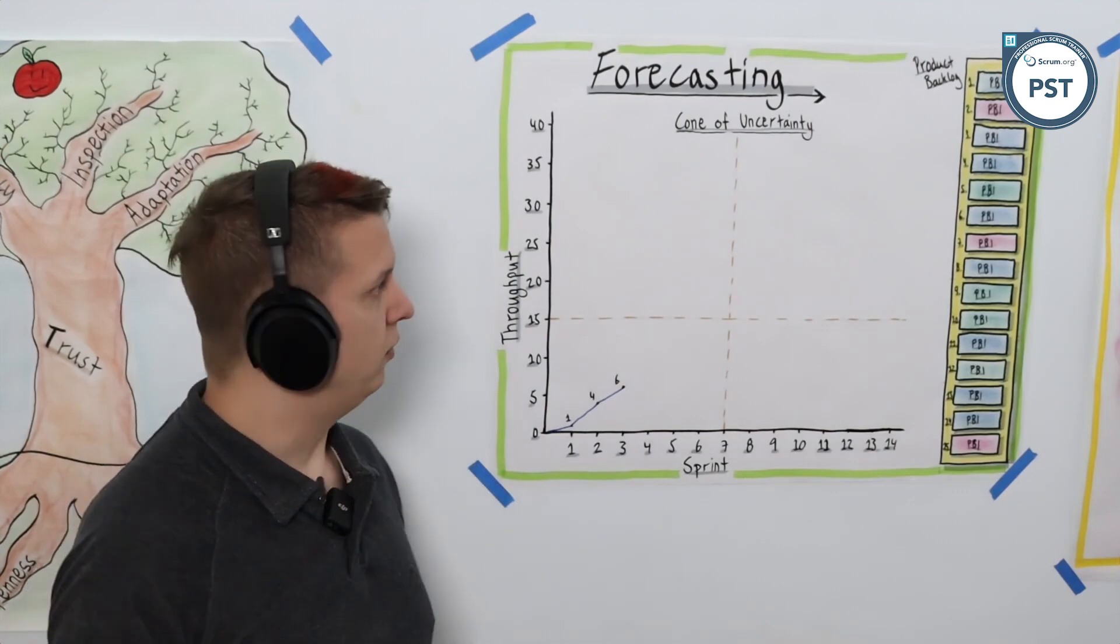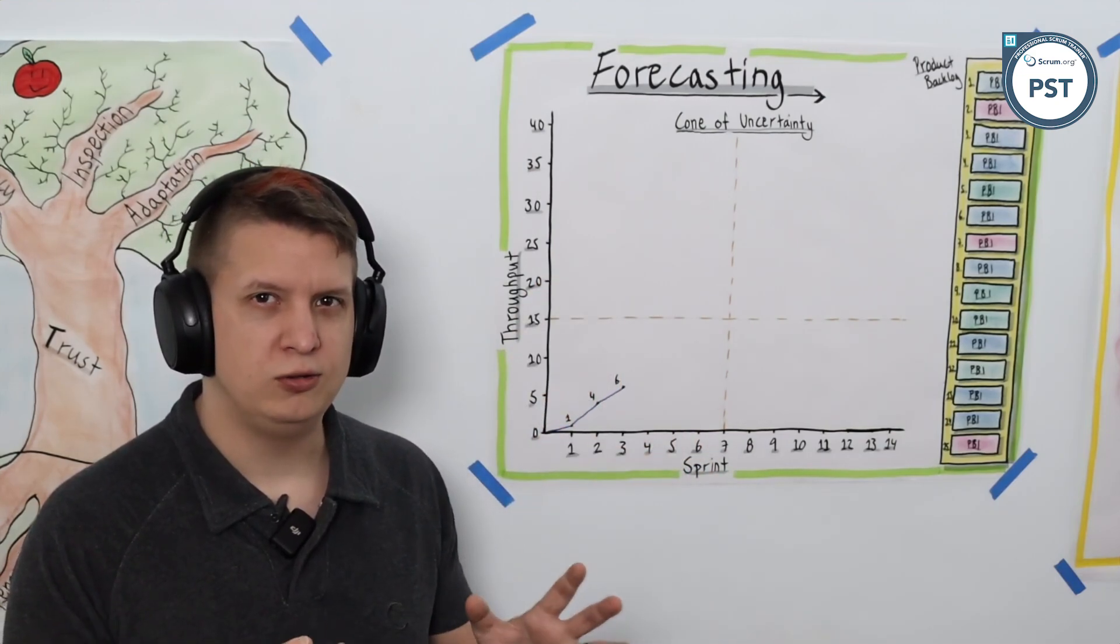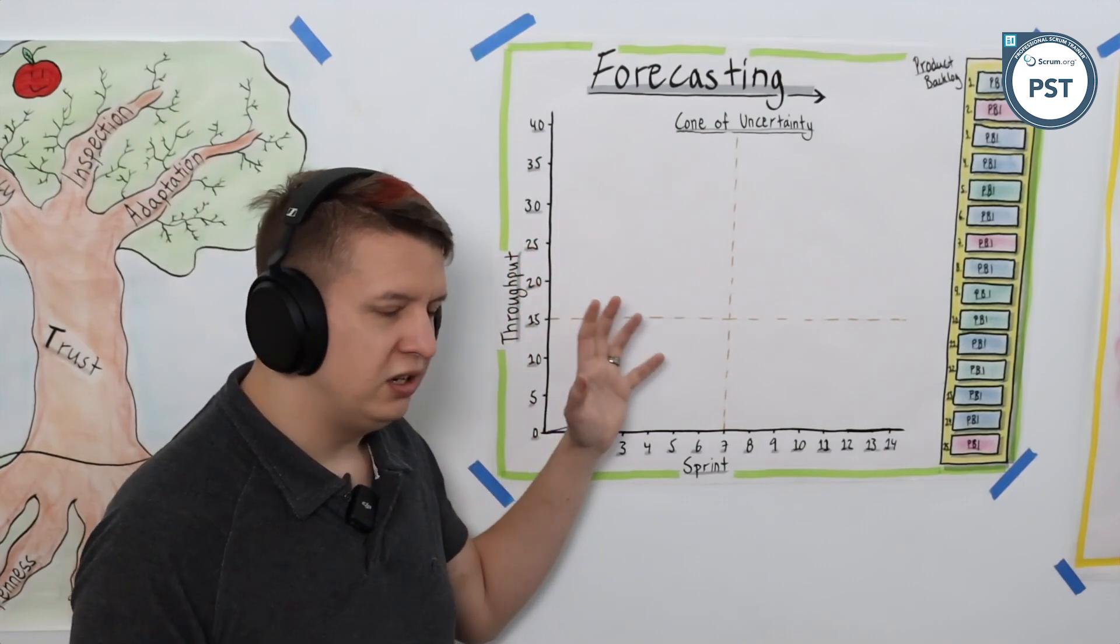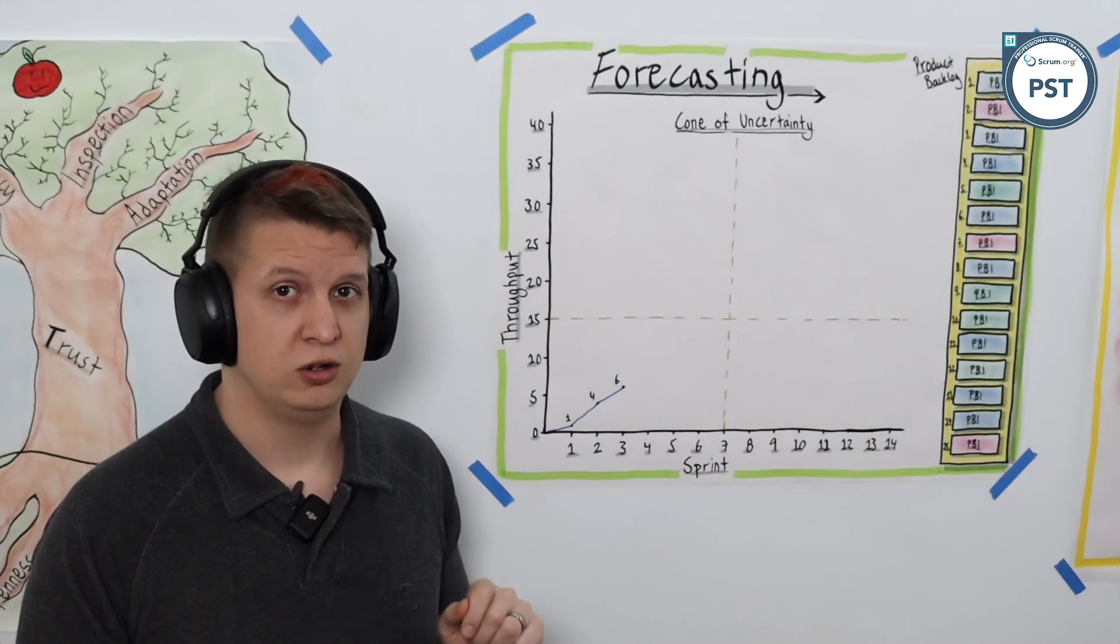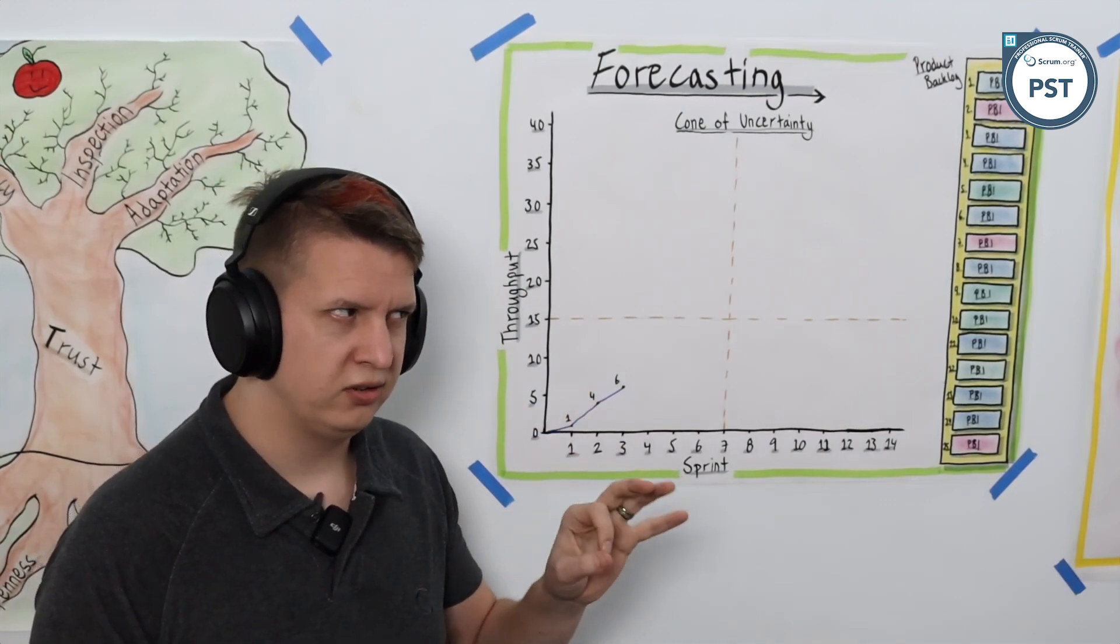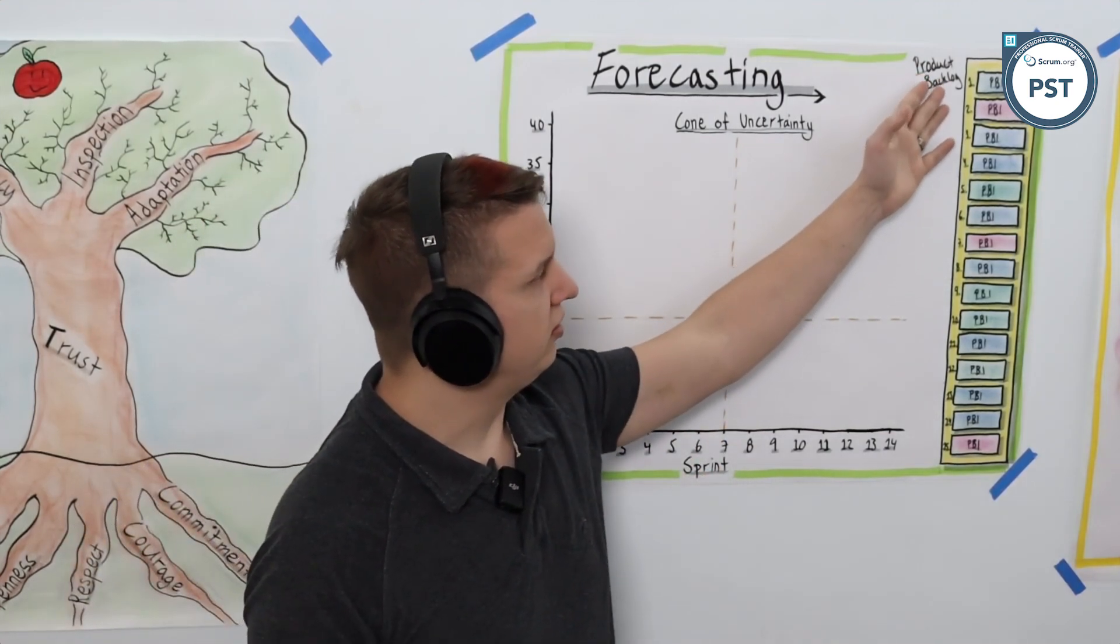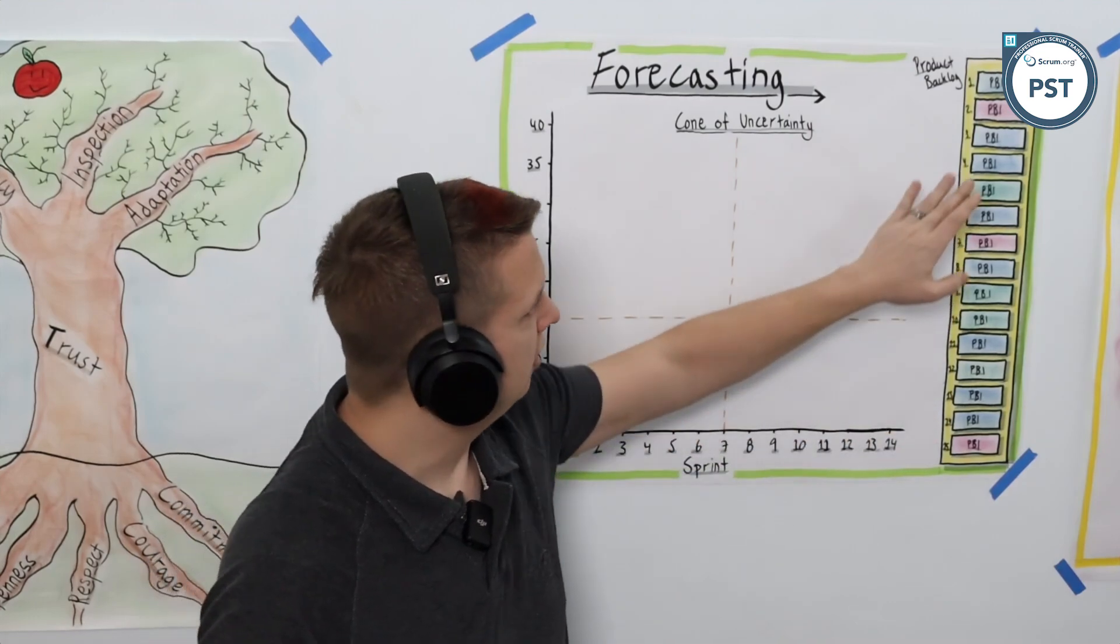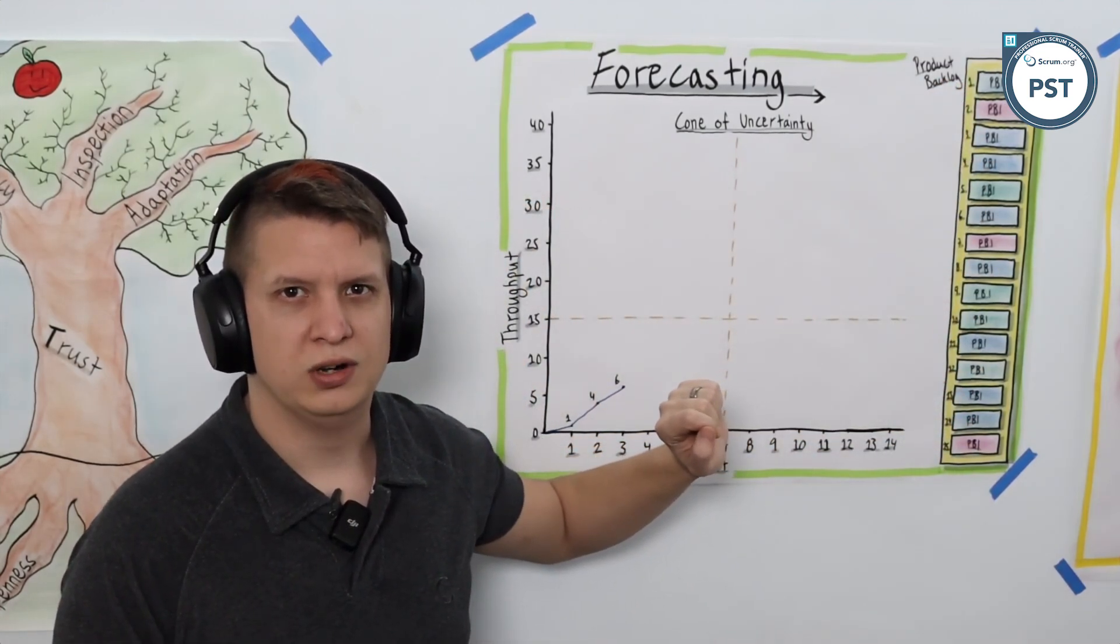We don't worry about the sizes, we just worry about the number of items. We're going to use something called the one-two-three visual that I created and use in all of my trainings. It's a very easy, simple way of sharing how easy it is to get started with forecasting and the cone of uncertainty. To help us along with how this translates to your product backlog refinement and talking to your stakeholders, we have our example product backlog here numbered 1 through 15.